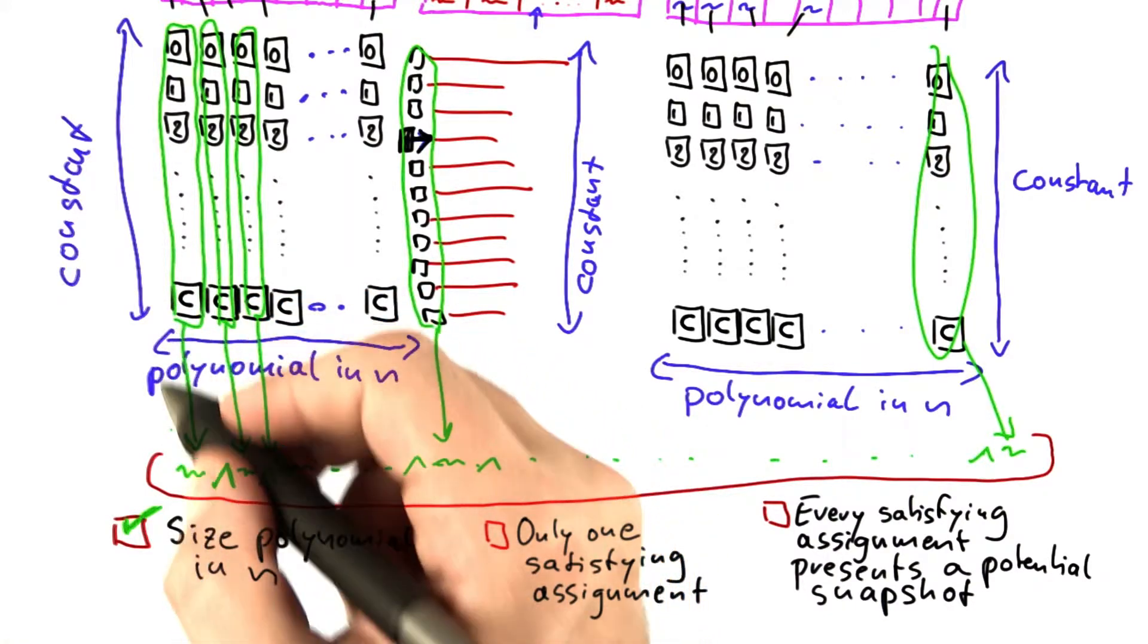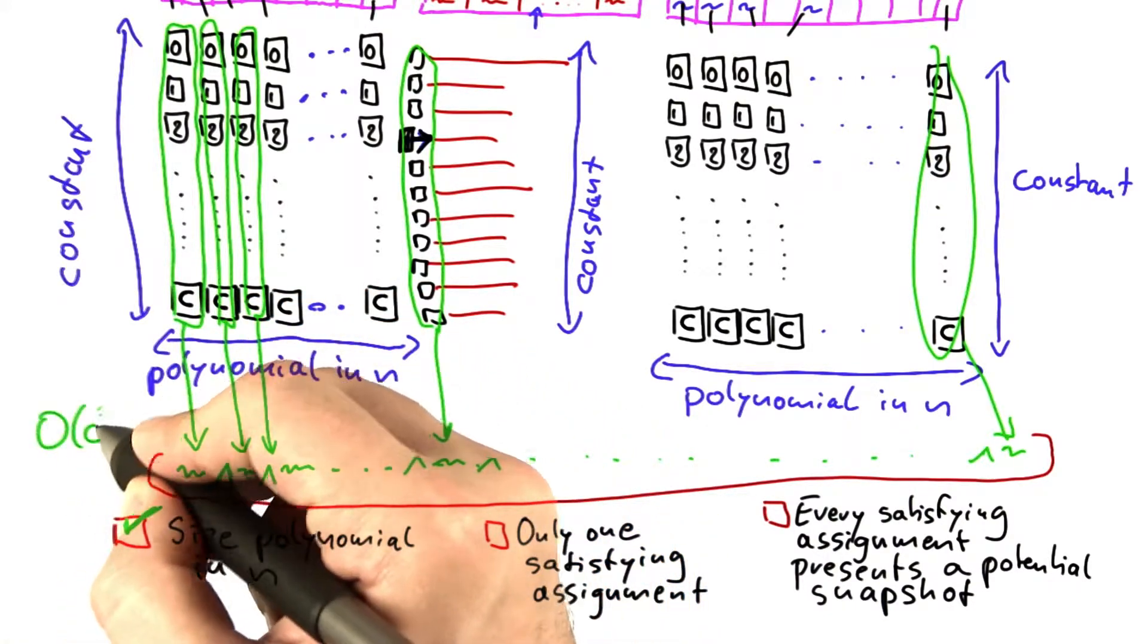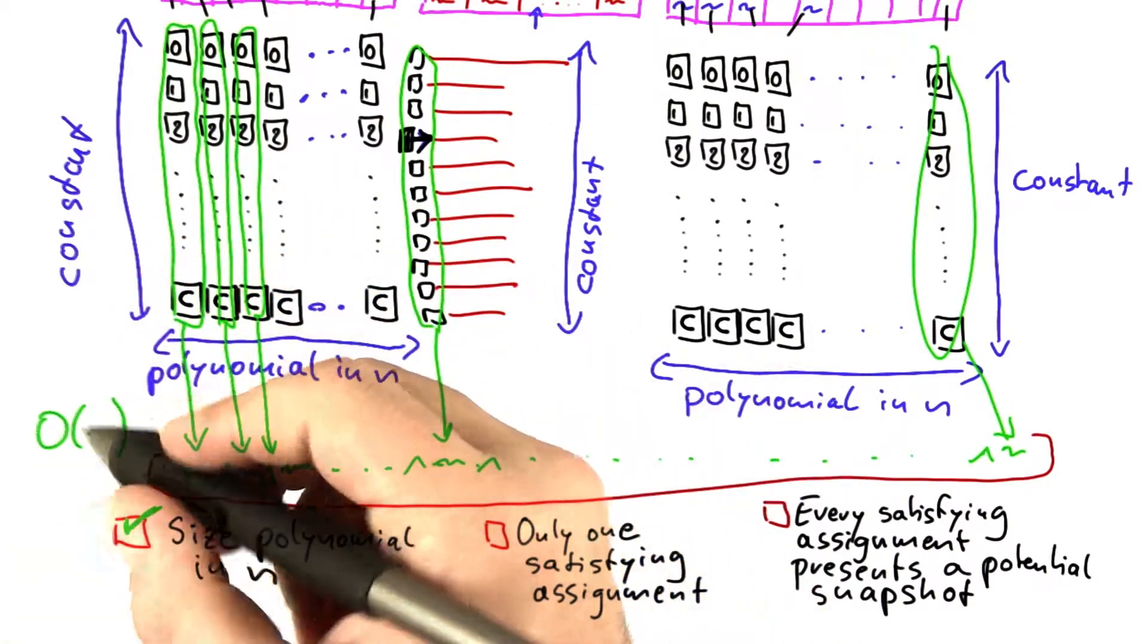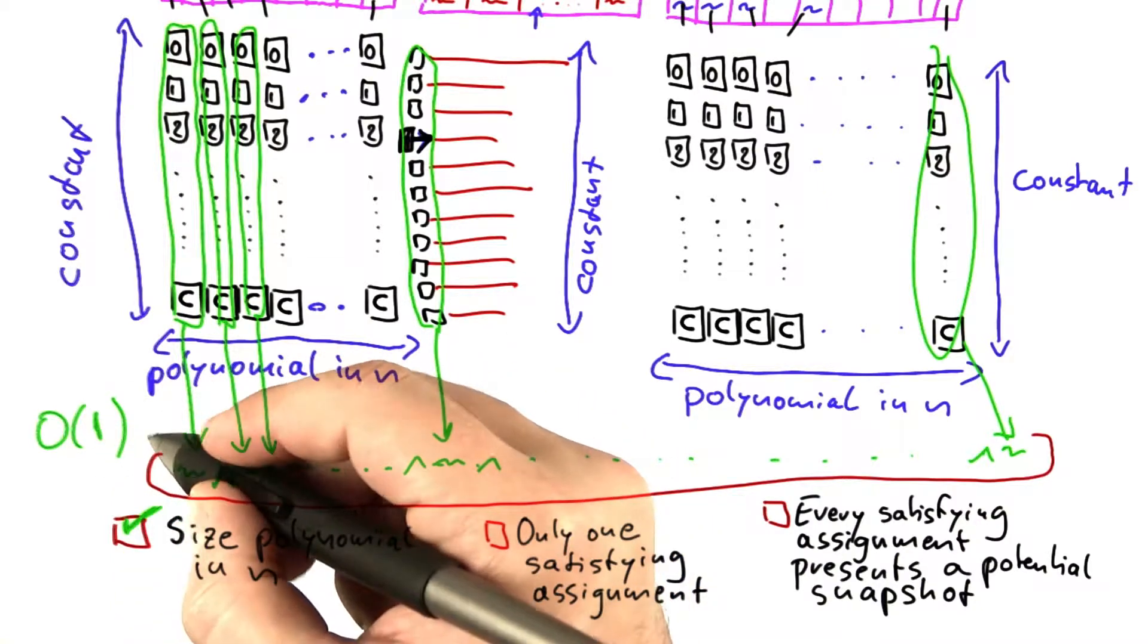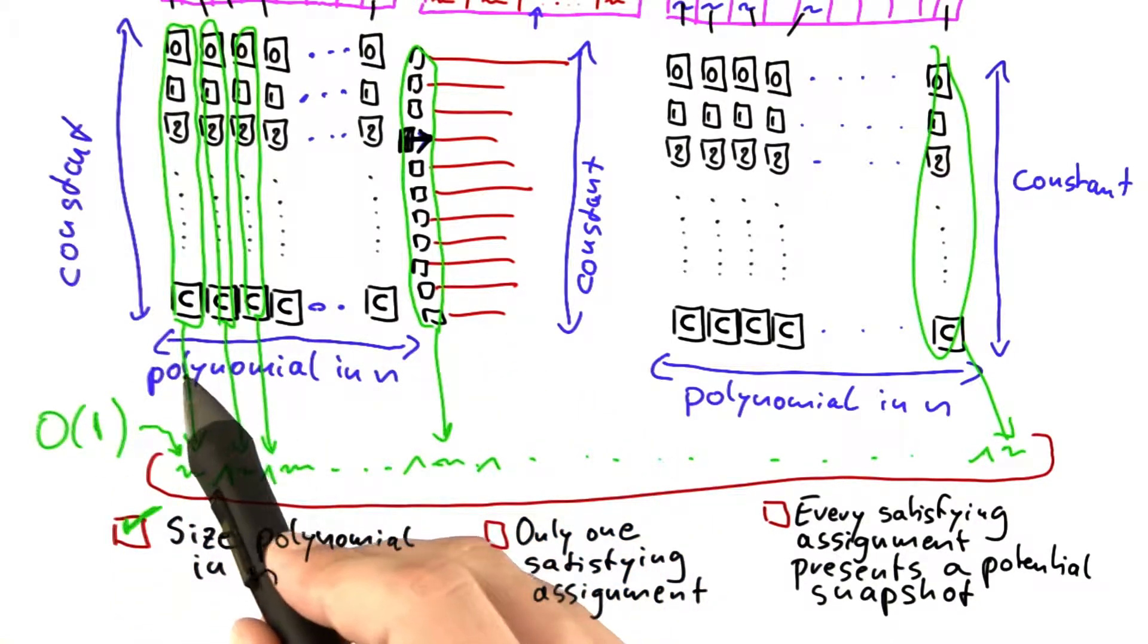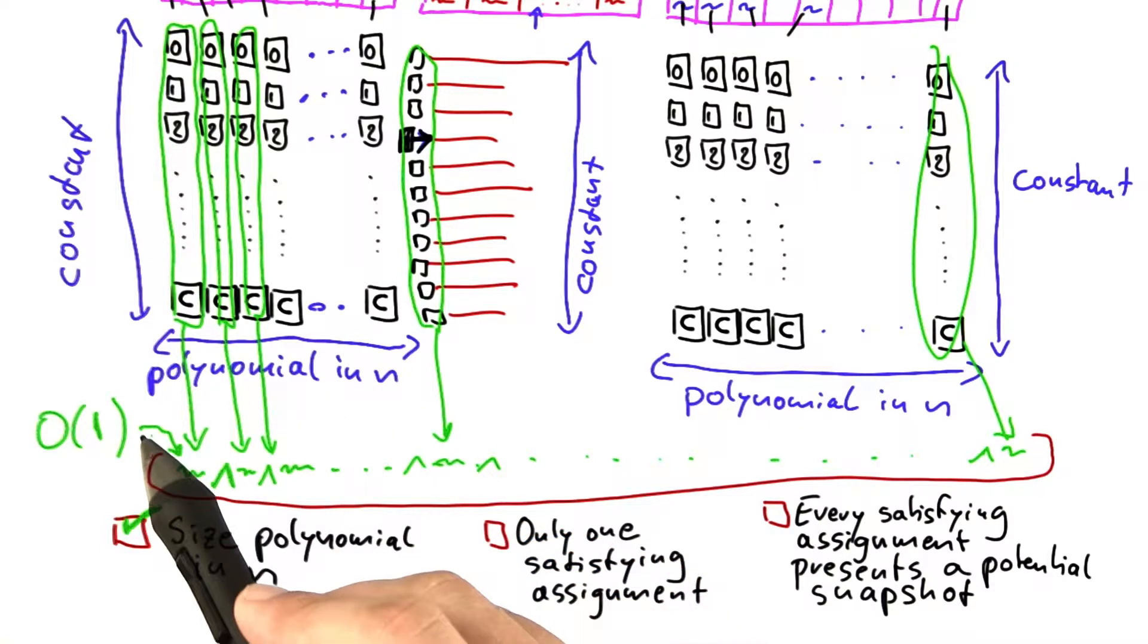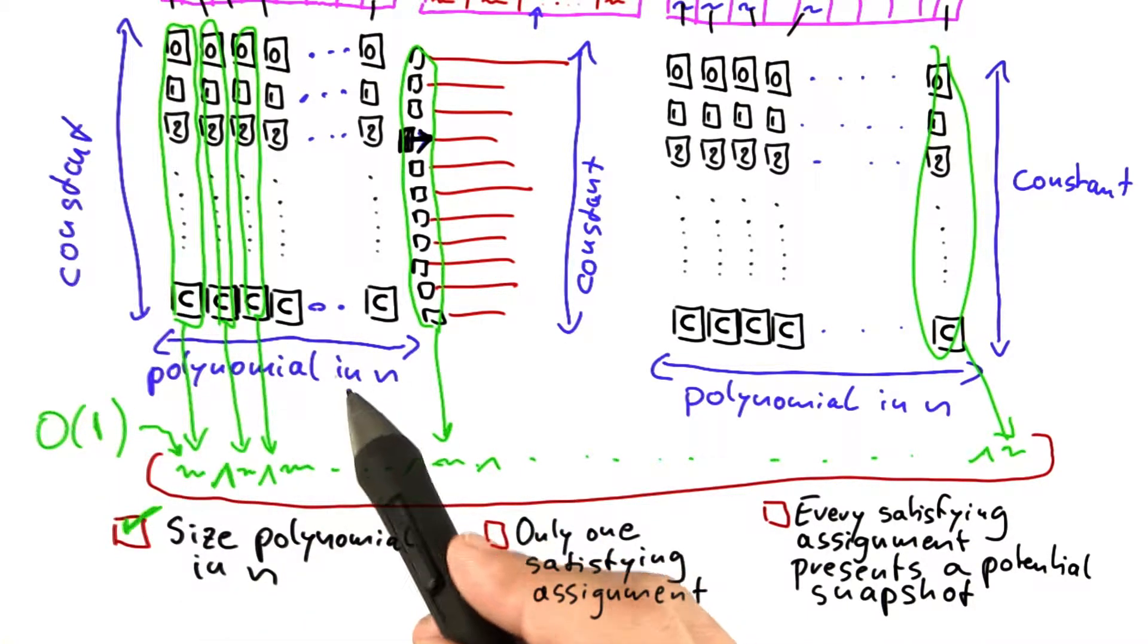So we have, it's kind of O of C squared. And C does not depend on the size of the input. So in a way, we can even write this as O of 1. Now we have a polynomial number of these Boolean formulas. So we have a polynomial of n times a constant. This is again a polynomial of n. So we're fine on this side here.